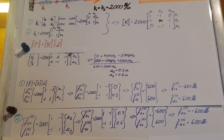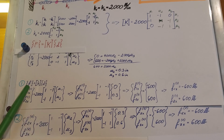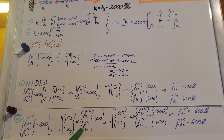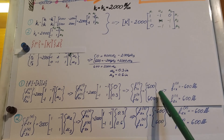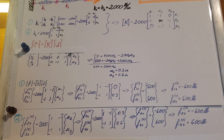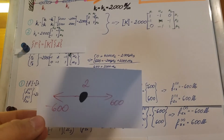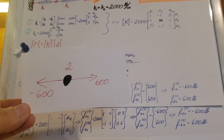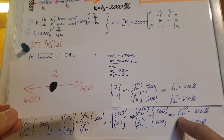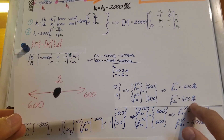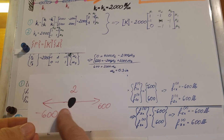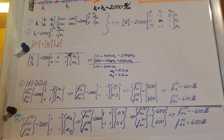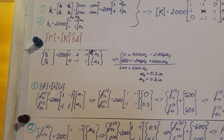We set up and do the same calculation for element 2. F2x and F3x for element 2 equals the local stiffness formula. We find F2x for element 2 equals negative 600 pounds and F3x for element 2 equals positive 600 pounds. As a check, the free body diagram at node 2 shows 600 one way and 600 the other way — node 2 is in equilibrium.